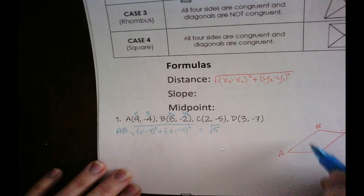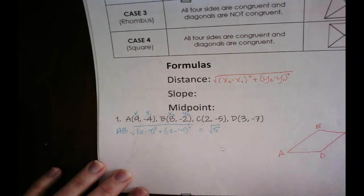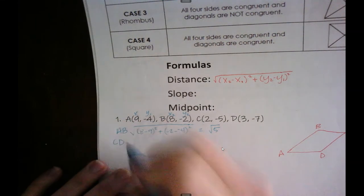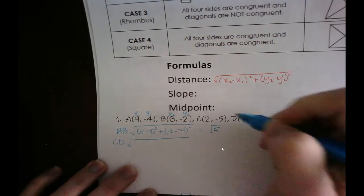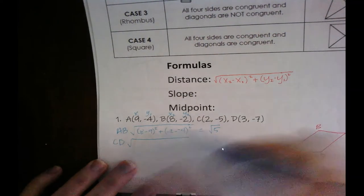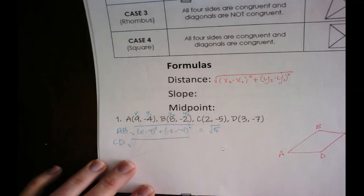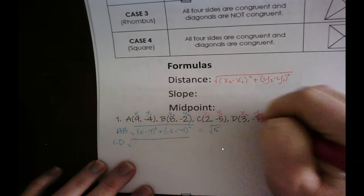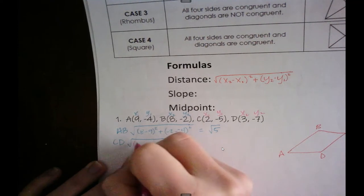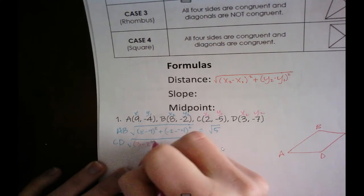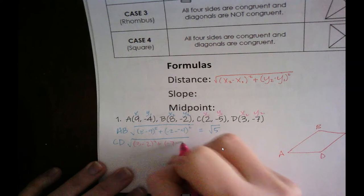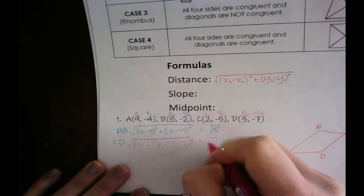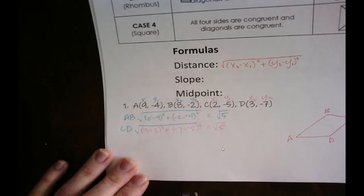Now we want to check the opposite side, which would be C to D. With C to D, we label x₁, y₁, x₂, y₂ and calculate the square root of (3 minus 2) squared plus (negative 7 minus negative 5) squared. If we do the math, that gives us the same result.